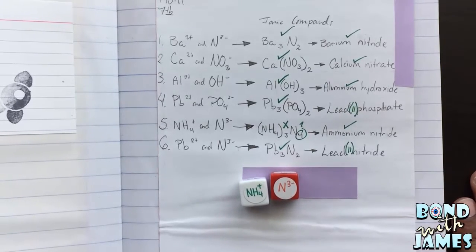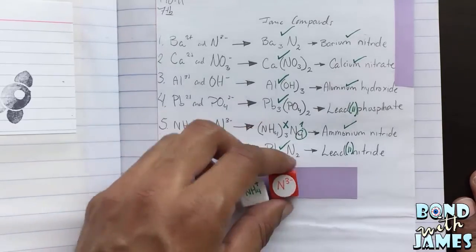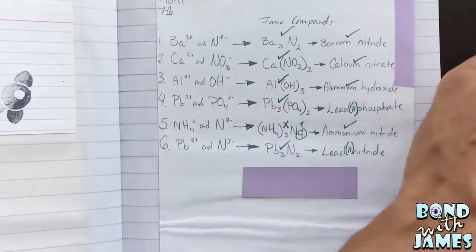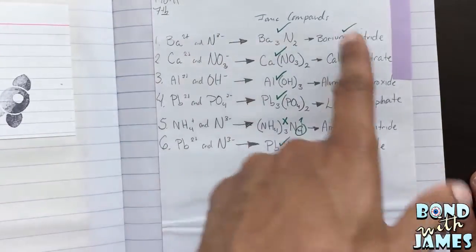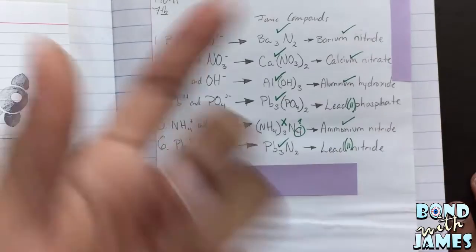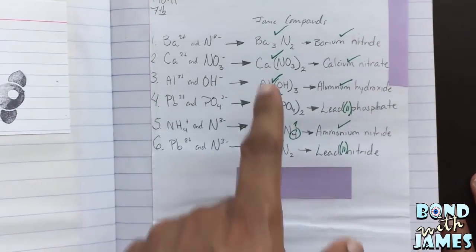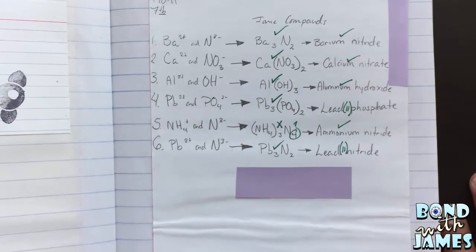Whereas I didn't really mind them rolling the dice and then me grading this, because I could do it really quickly. I can just look at what they had and I can look at the formula and I can look at the name and give them credit for whether they got it right or incorrect. That concludes my video.